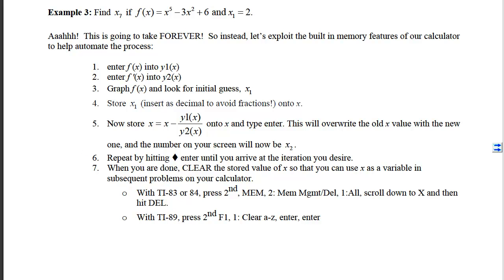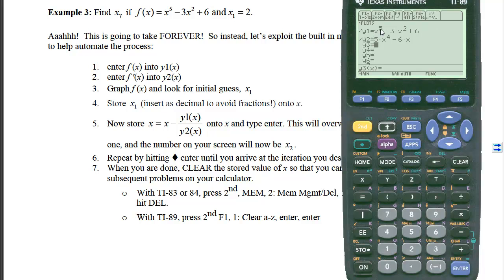So let's pull our calculator up. Notice that in my y-editor, I have put the original equation x to the 5th minus 3x squared plus 6, and I put its derivative into y sub 2. On the home screen now, I'm going to store this 2 onto x. So I'll do 2, and then I'll use this button here that says store, and I'm going to store it onto the variable x. If I hit enter, it is now stored.